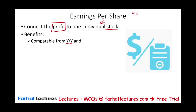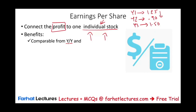For example, in year one your EPS was $1.25; in year two your EPS is $0.90. Your EPS went down. Maybe in year two the company made more money, but also the company issued more stock. Regardless, when I look at year one and year two, I have two comparable figures. In year three, my EPS is $1.50. So I can compare the profit of the company to my individual stock — and that's why it's the most widely used financial ratio. You can also compare company to company.